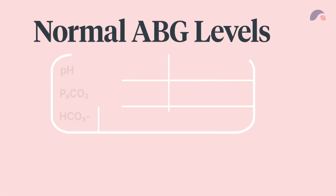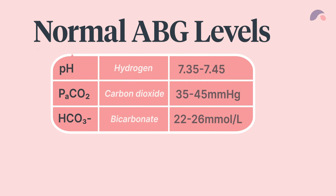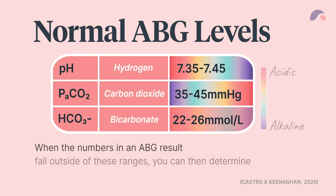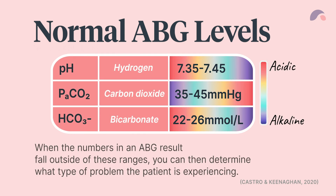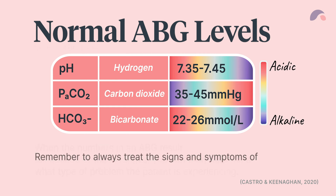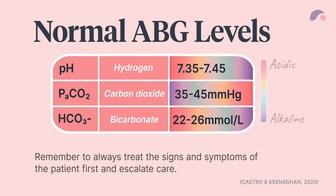Here is a table to clearly outline the values. When the numbers in an ABG result fall outside of these ranges, you can then determine what type of problem the patient is experiencing. Remember to always treat the signs and symptoms of the patient first and escalate care.